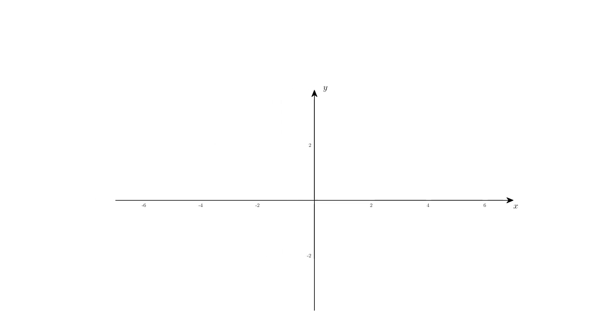So now before taking the divergence operator, every point in space had a vector pointing in some direction. But after taking the divergence operator, every point of space has a number associated with it, measuring how much of this vector is flowing in or out.